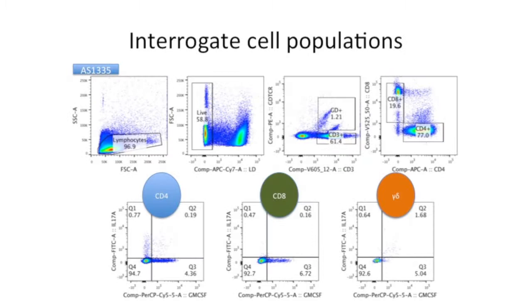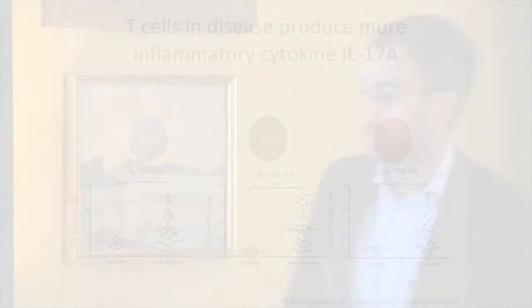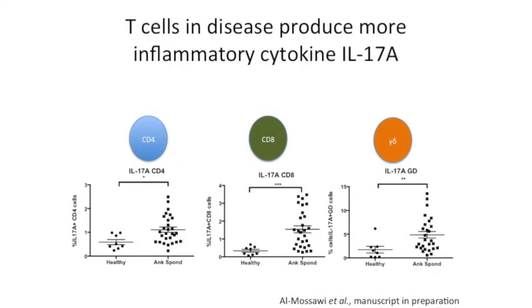The neat thing is you can drill down further. On my machine I can do about 14 colours in one go — putting lots of colours in simultaneously and drilling down on different populations to interrogate which inflammatory molecules they're expressing. If we do that, we can see that a particular molecule, IL-17A, which is made by a type of T cell, is overexpressed in the disease. These are disease patients versus healthy people I've roped into giving me blood in the lab.